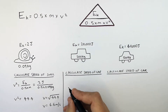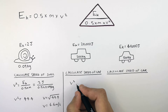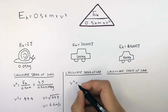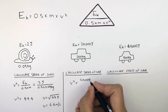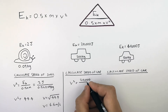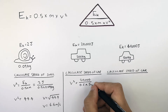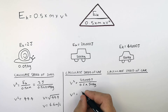So we're trying to calculate speed, V. You cover V and you're left with V squared equals kinetic energy divided by 0.5 times mass. Substituting in the numbers: V squared equals 20,000 joules of stored kinetic energy divided by 0.5 times 500 kilograms. So V squared equals 80.